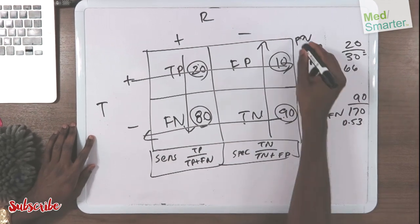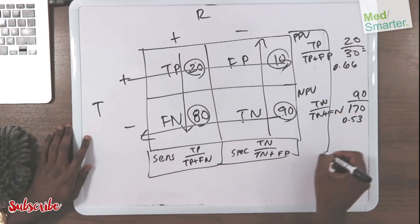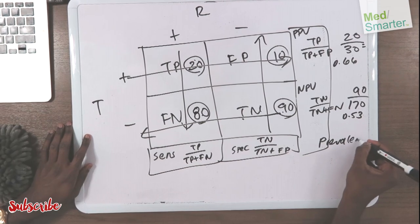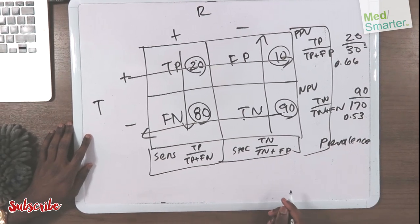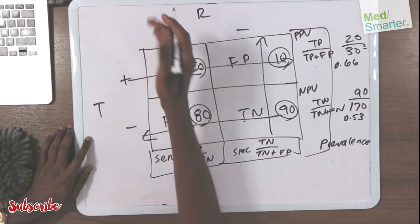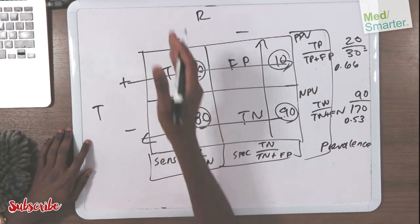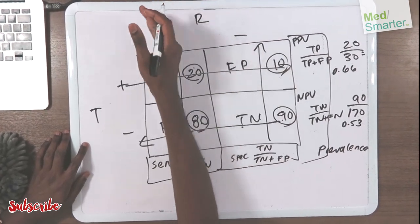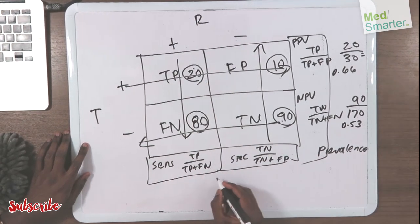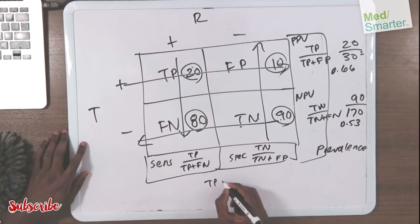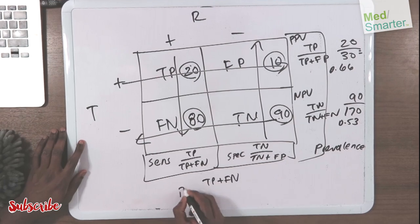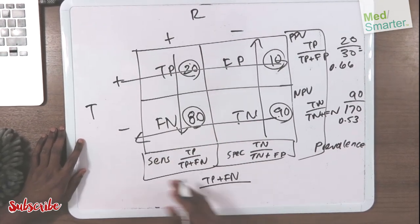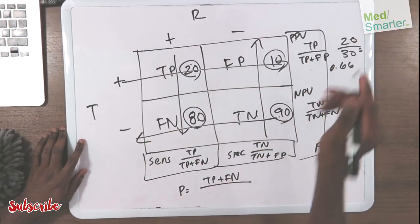So the question comes up: what is prevalence? Prevalence is going to be who actually has the disease. So here that was 80 plus 20 — the people that actually have the disease, the reality, the positive, the people that actually, in reality, have the disease. Your prevalence is your true positive plus false negative — that's the people who actually have the disease, divided by everything, everybody in the population.